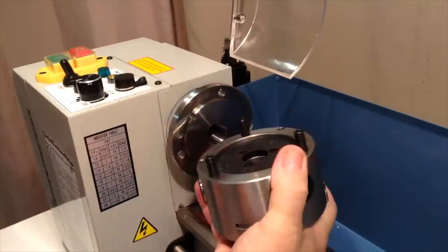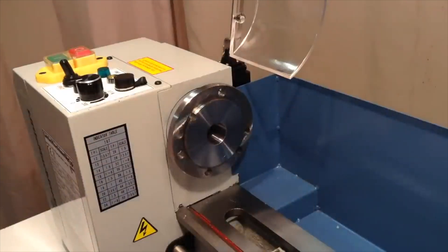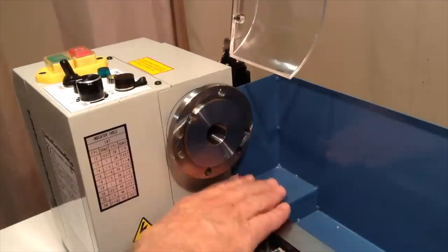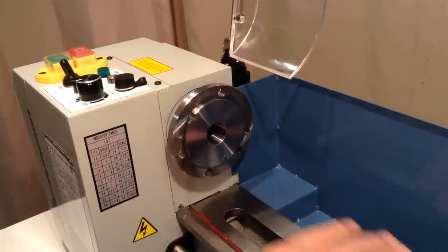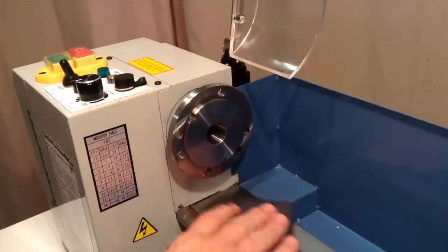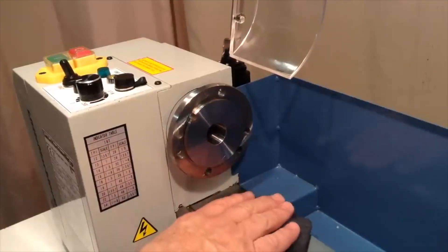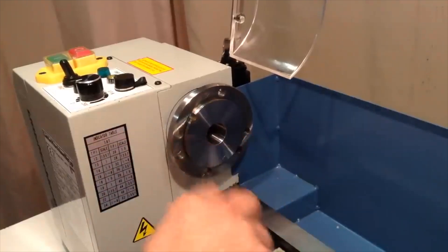Once you've got those loosened you can just lift the chuck off. It's a good idea, particularly when you're new to working at the lathe, to put some kind of protective board or a shop rag or something down in this area so that if you accidentally drop the chuck you don't gouge up your ways.